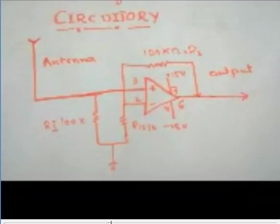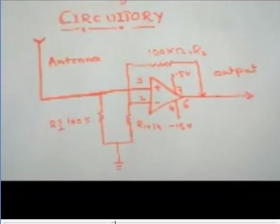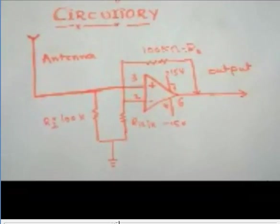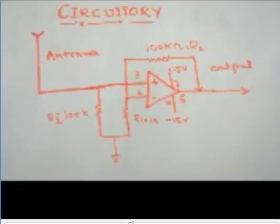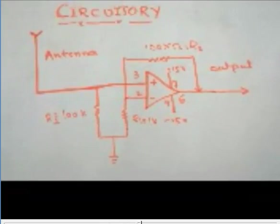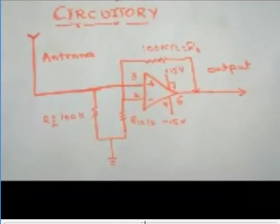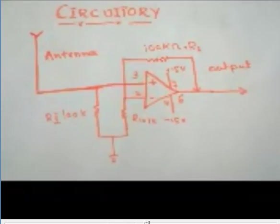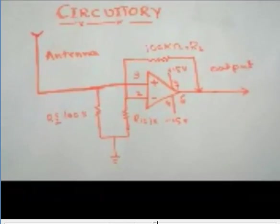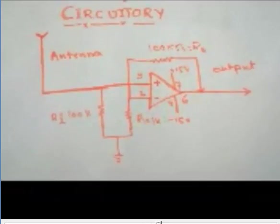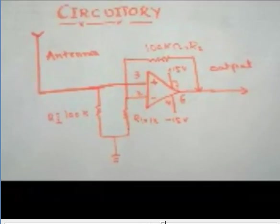connect DC voltage plus 15 to pin number 7 and minus 15 to pin number 6. Now connect resistor R1 of 1 kiloohm at the inverting terminal of the op-amp, and connect R2 100 kiloohm at the non-inverting terminal of the op-amp, and ground both these resistors.